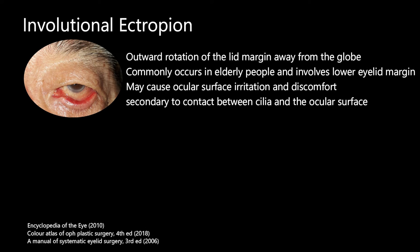Involutional ectropion is defined by outward rotation of the lid margin away from the globe. It commonly occurs in elderly people and involves the lower eyelid margin. If left untreated, it may lead to ocular surface irritation and eye discomfort.